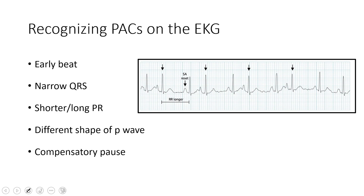So if we look at this example — this P wave, how it marches out, is probably our baseline rhythm starting from the sinoatrial node. But if you look at these other beats, here's an oddly shaped P wave with a different length PR — this is our special P wave coming too early. The P wave is a different shape, the PR is a different length. And sometimes if they happen too early, it takes a little bit longer for that sinoatrial node to reset, so you may see a bit of a pause after a PAC — the pause may be a little bit longer because the whole system has to reset.